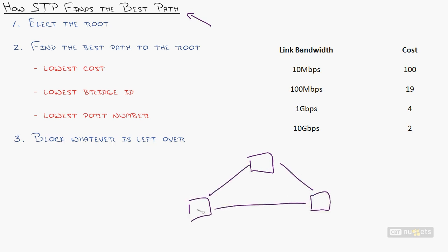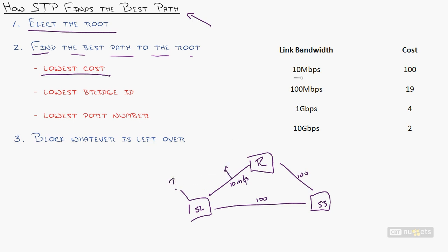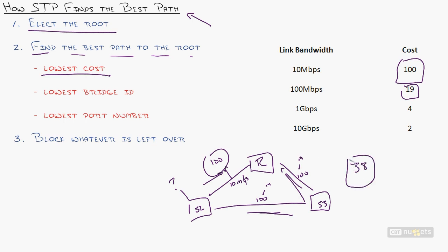Once the root is elected, all other switches find the best path to the root. Step one is lowest cost — they look at their link speed. Say this is a 10 Mbps link versus a 100 Mbps link: a 10 Mbps link has a cost of 100, a 100 Mbps link has a cost of 19. The switch adds up costs across all links it must cross and picks the lowest total — that becomes the root port.